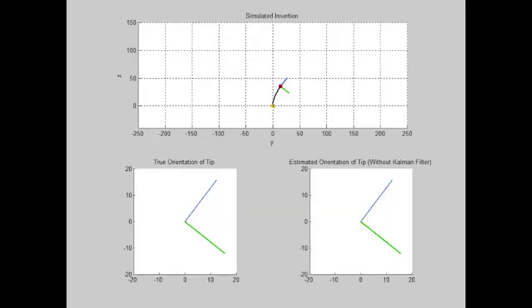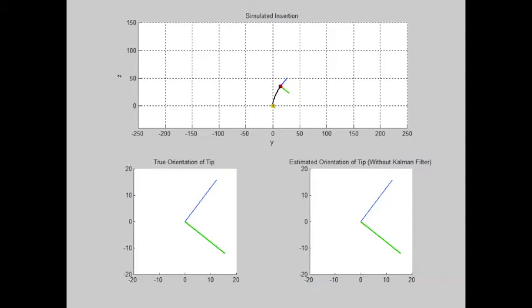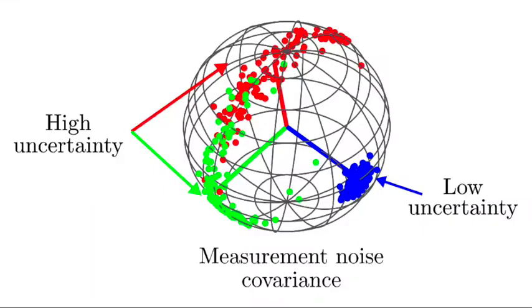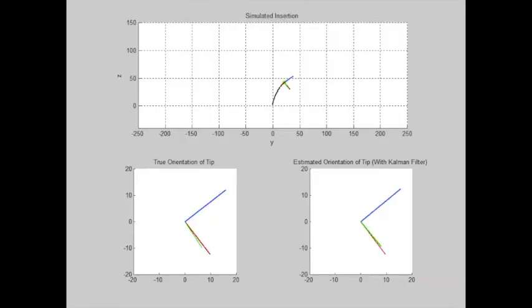This process generates an orientation measurement that can be noisy, as is seen in this simulated needle insertion. The true orientation is shown on the bottom left, and the measured orientation is on the bottom right. Notice that the measurement's tangent axis is accurate, but the roll about the tangent axis is unstable. By encoding this information in the measurement noise covariance of the conditional Kalman filter, a reliable orientation estimate can still be achieved.